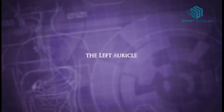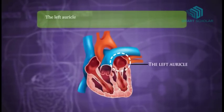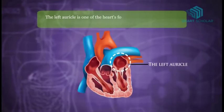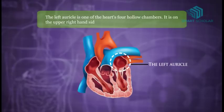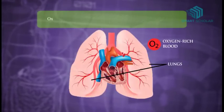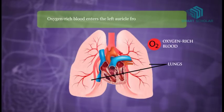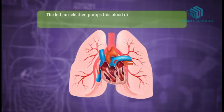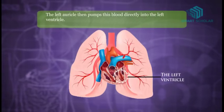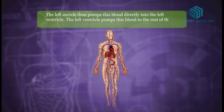Let's get to know about the left atrium. The left atrium is one of the heart's four hollow chambers. It is on the upper right hand side of the heart. Oxygen-rich blood enters the left atrium from the lungs. The left atrium then pumps this blood directly into the left ventricle, which pumps this blood to the rest of the body.